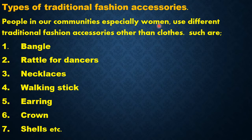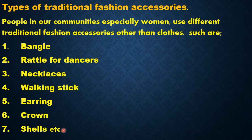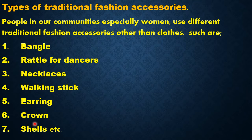Let's see the types of traditional fashion accessories. People in our communities, especially women, use different traditional fashion accessories other than clothes, such as bangles and rattles for dancers. The dancers wear their rattles, and even kings wear bangles too. Other types include necklaces, walking stick, earrings, crown, and shells. These are some types of traditional fashion accessories people wear in the community, and others.